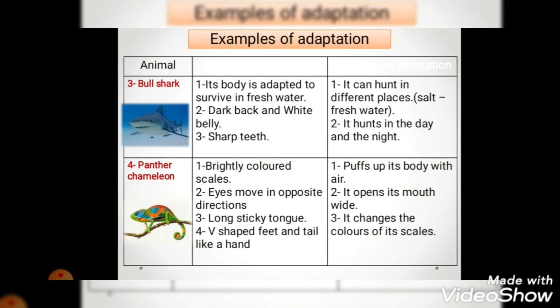Then we talked about the bull shark and the panther chameleon. The bull shark is a very rare type because its body is adapted to survive in both fresh and salty water. It has a dark back and white belly for camouflage in the sea. Third, it has sharp teeth to tear its food. All of these are structural adaptations. But its behavioral adaptation is that it can hunt in different places - in salty and fresh water. Anything related to eating is behavioral adaptation. It also hunts in the day and at night.